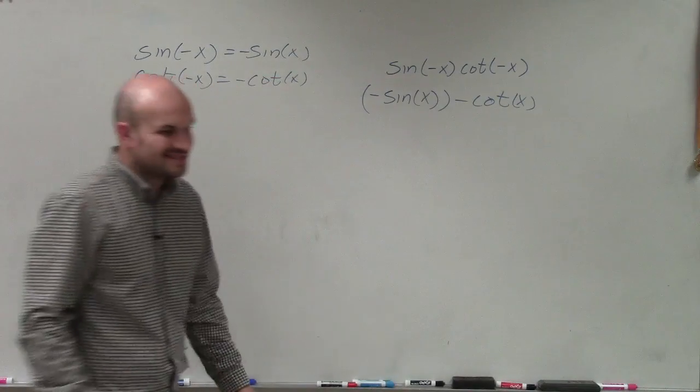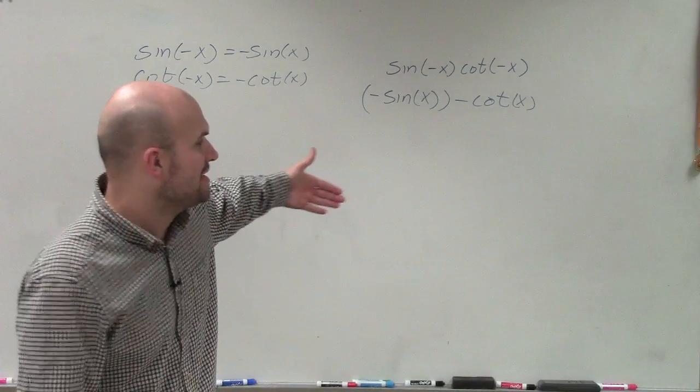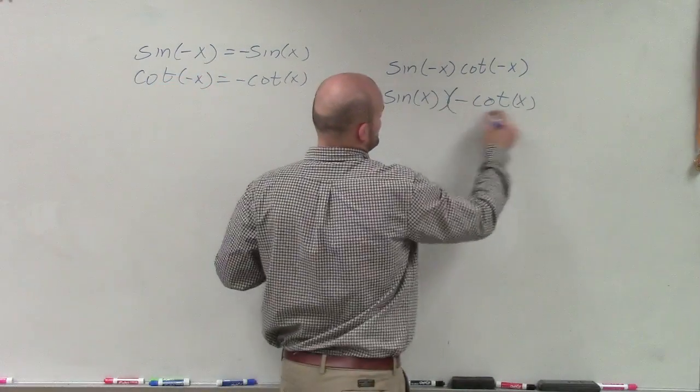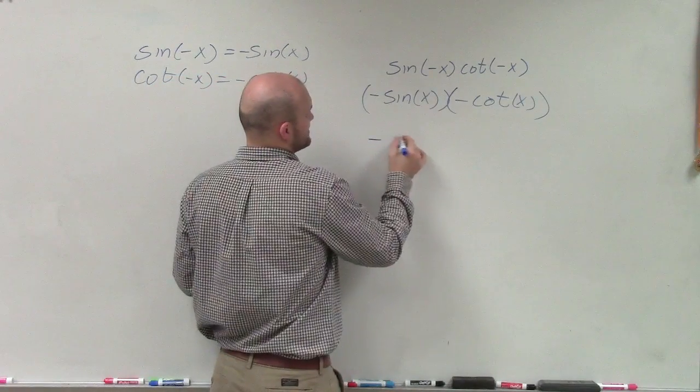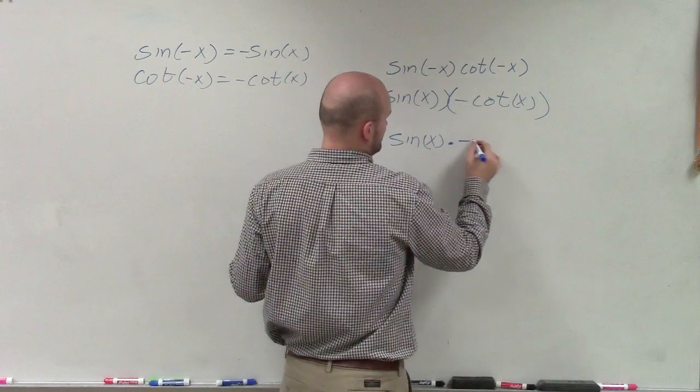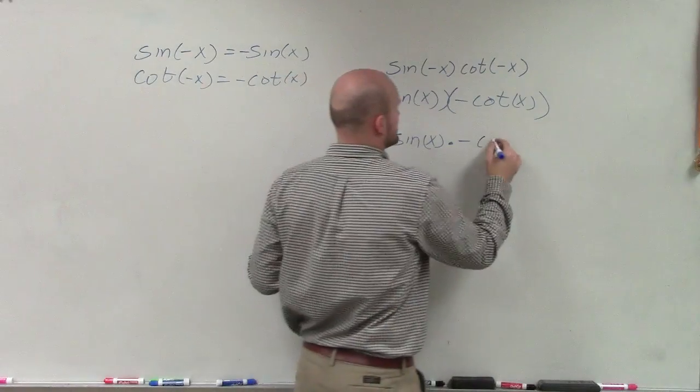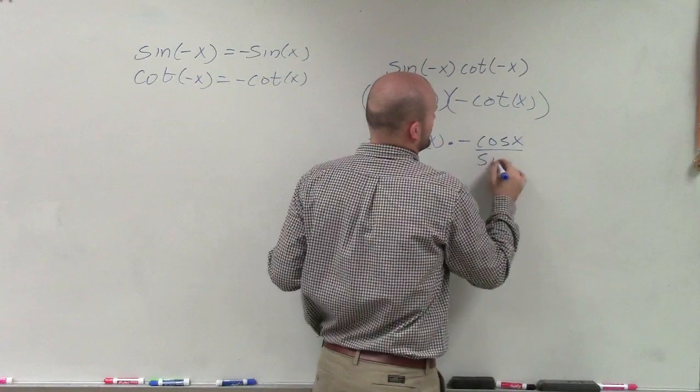Now, it's really hard to kind of simplify sine times cotangent unless we rewrite cotangent in terms of sines and cosines. So I can do that by have sine of x times negative. Remember, tangent is sine over cosine. So cotangent is going to be cosine of x over sine of x.